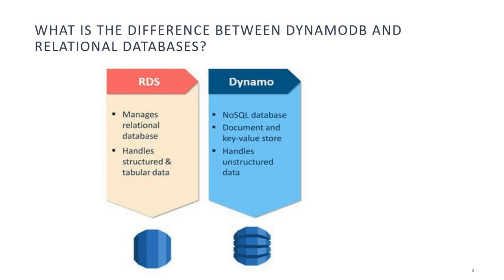What is the difference between DynamoDB and a relational database? Relational databases manage structured and tabular data, while DynamoDB handles NoSQL database, document and key-value store, and unstructured data. DynamoDB is highly scalable, whereas relational databases are designed for structured data and are less scalable than NoSQL databases.